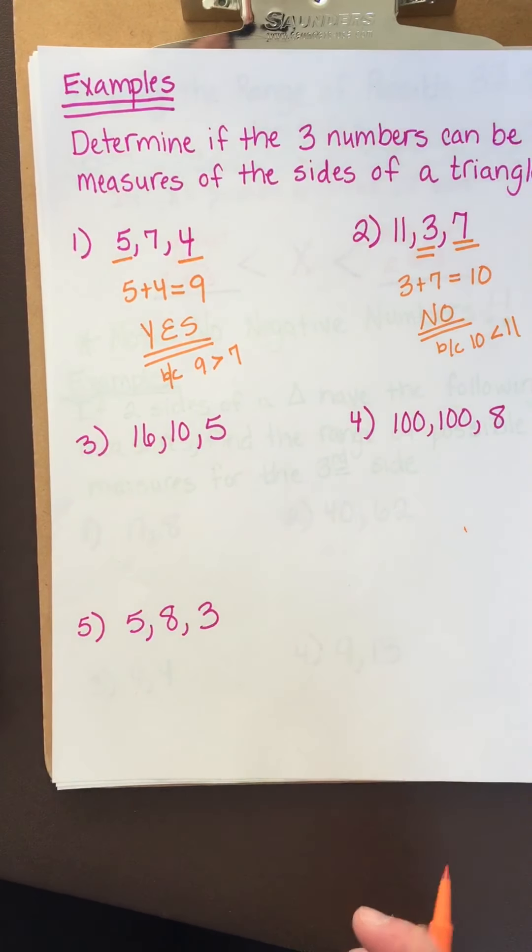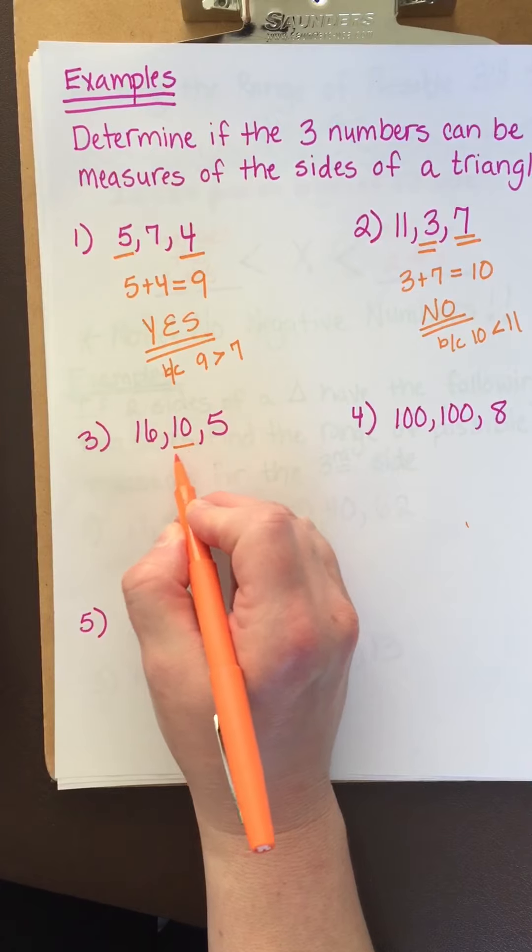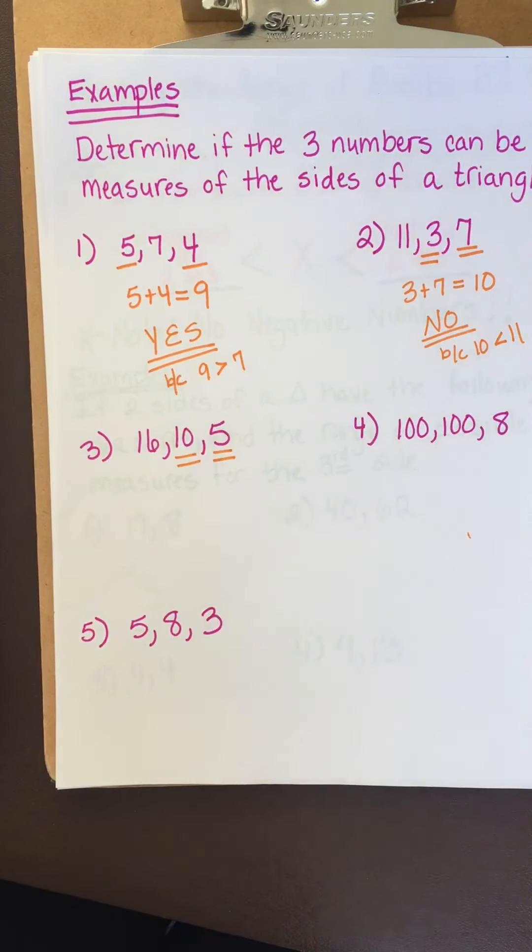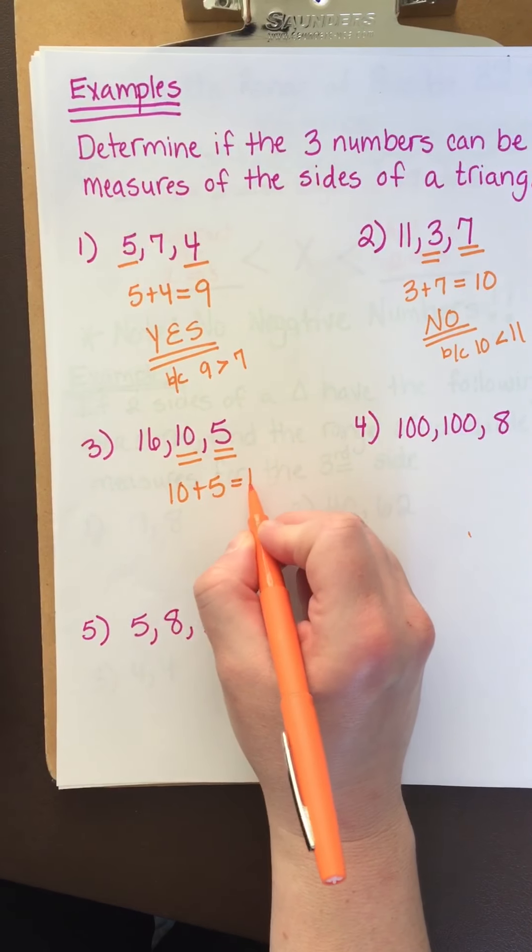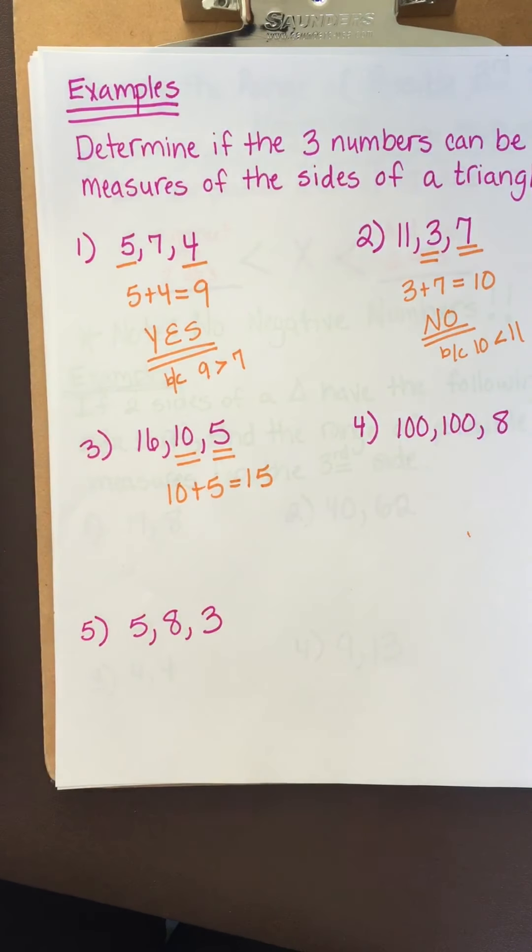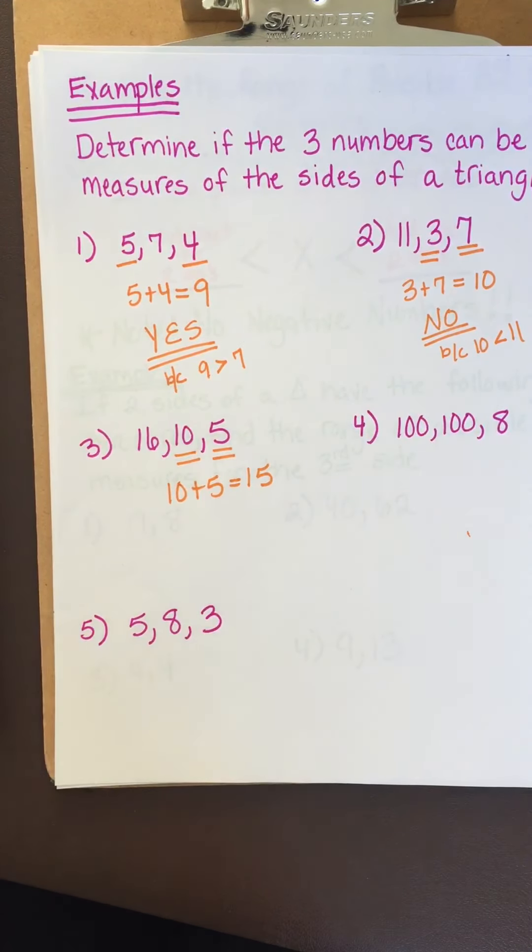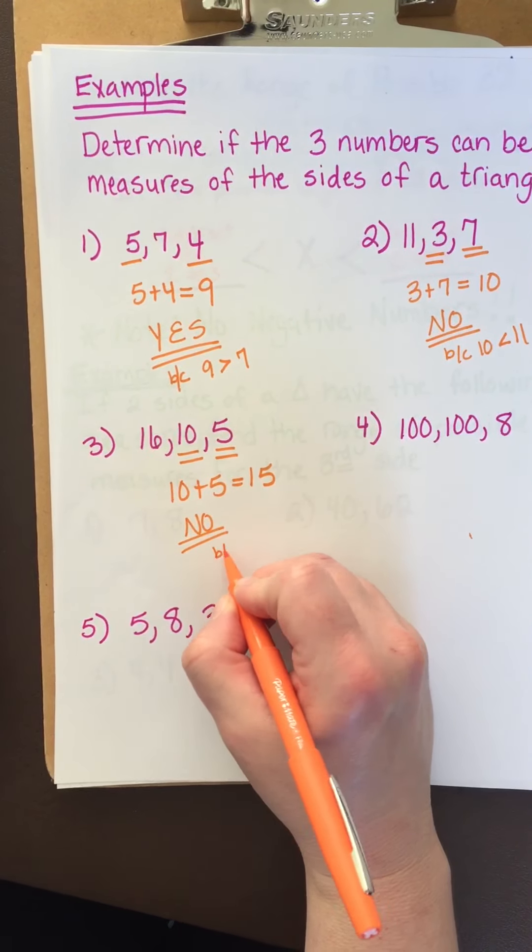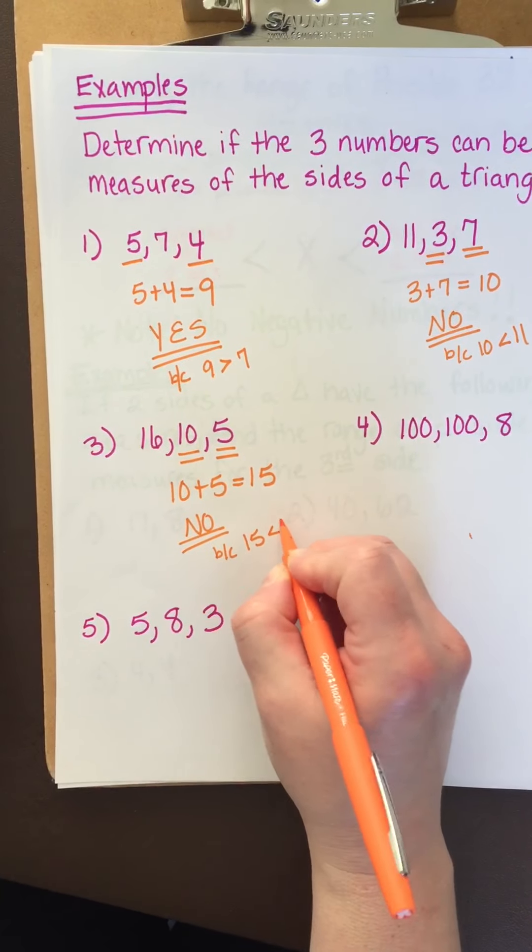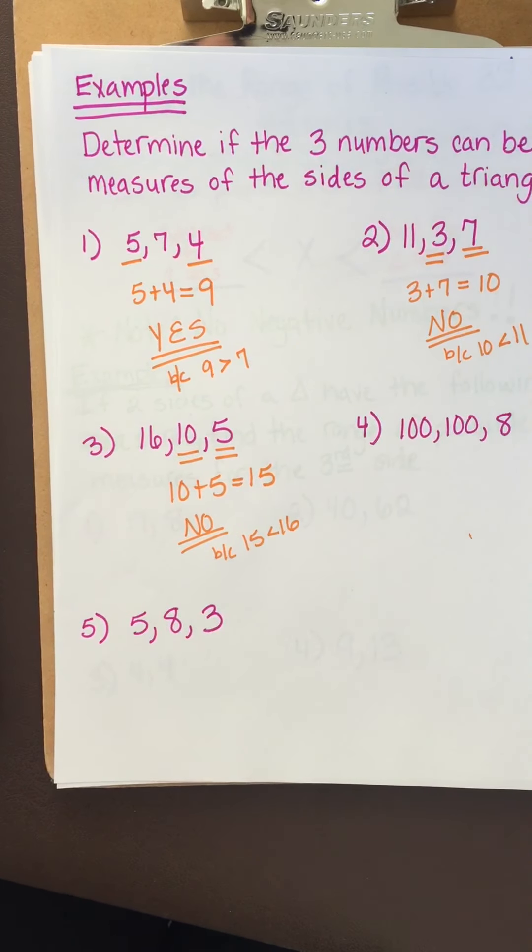All right. Let's look at this one. 16, 10, and 5. So we have 10 and 5 are the two smallest numbers. Add them up. 10 plus 5 is 15. Ask yourselves, is 15 bigger than 16? No, it is not. So no. This cannot be a triangle because 15 is less than 16 and it's got to be greater.